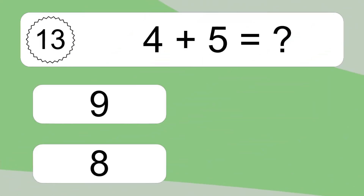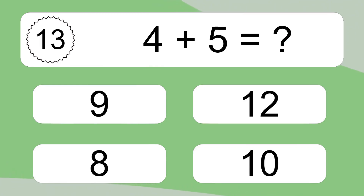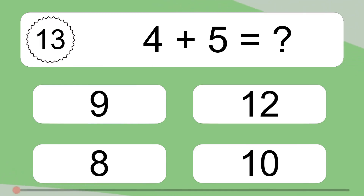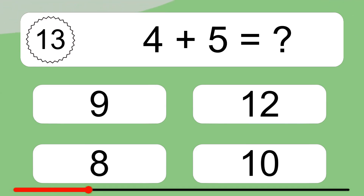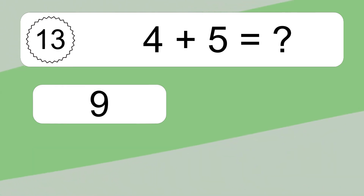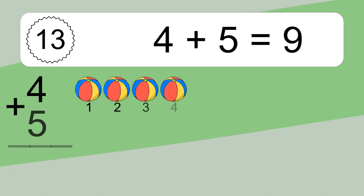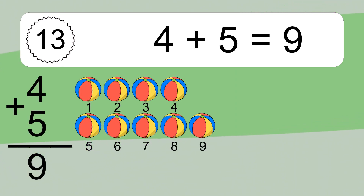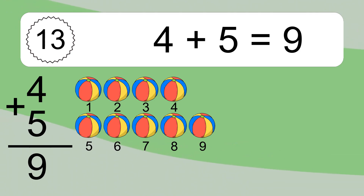4 plus 5 equals what? 3, 4, 5, 6, 7, 8, 9. Let's count it. 1, 2, 3, 4, 5, 6, 7, 8, 9.